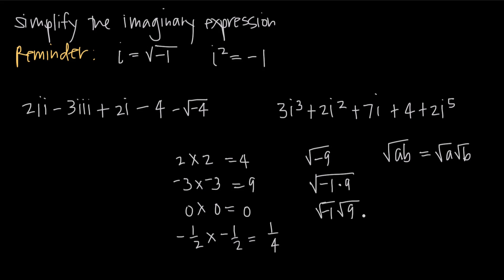We know the square root of positive 9 is 3. So now we have 3 times the square root of negative 1. This is where a mathematician named Euler came up with an easy way to express this value. He called the square root of negative 1 simply i. So 3 times the square root of negative 1 becomes 3i. We now define the imaginary number i as equal to the square root of negative 1, and i squared is equal to negative 1 — because squaring both sides gives i squared on the left, and negative 1 on the right.